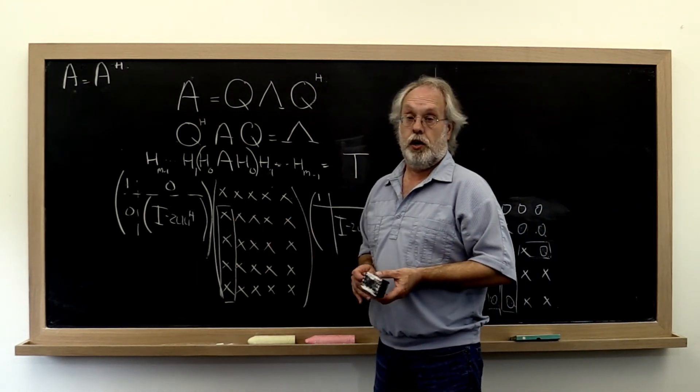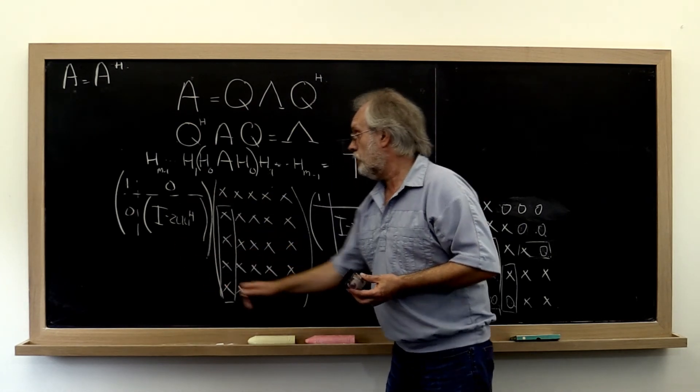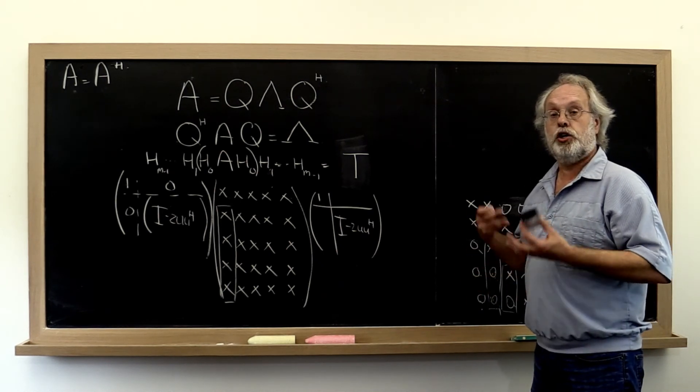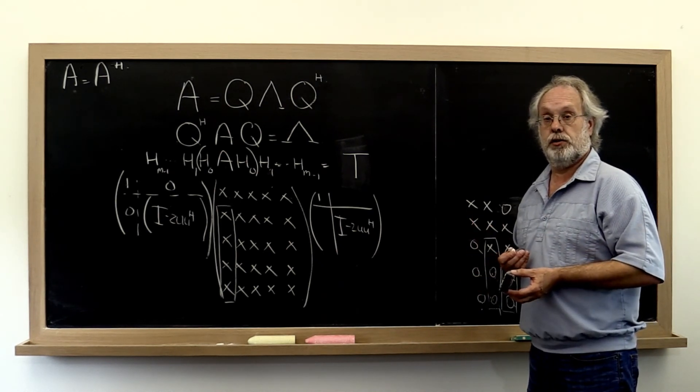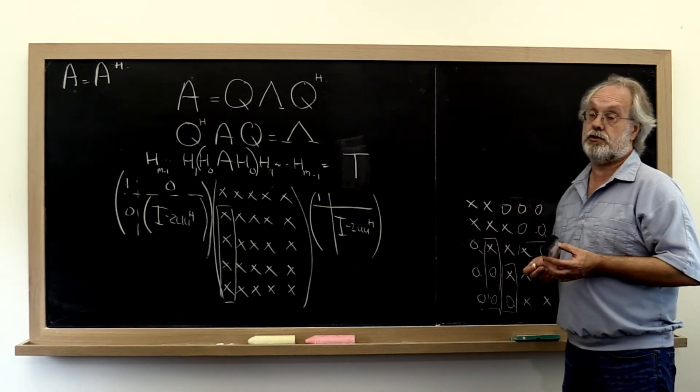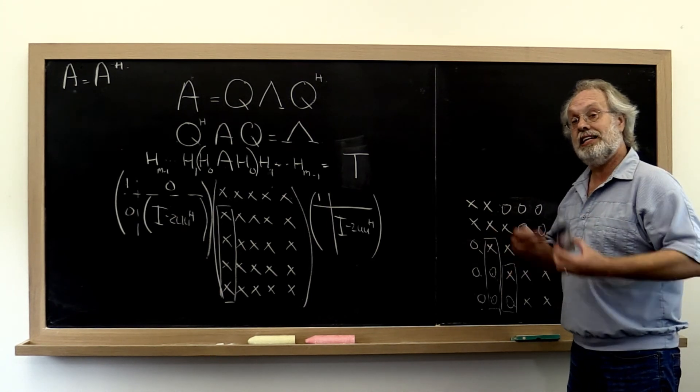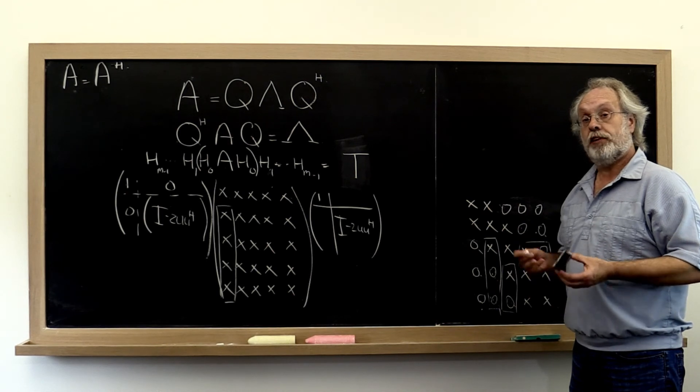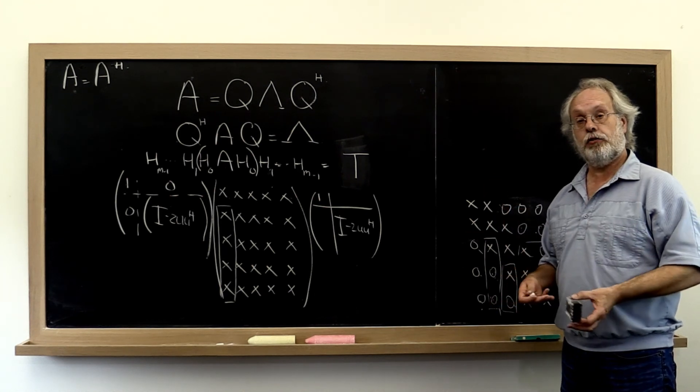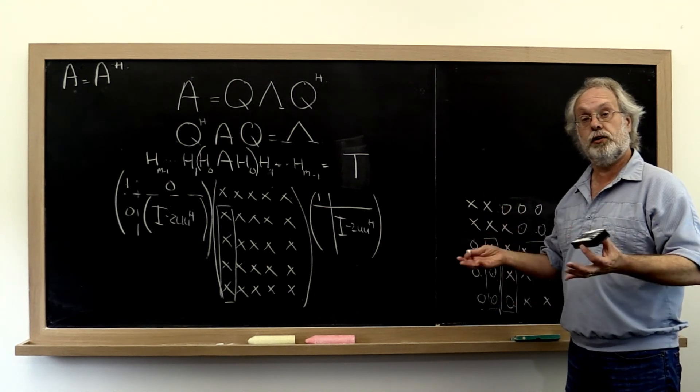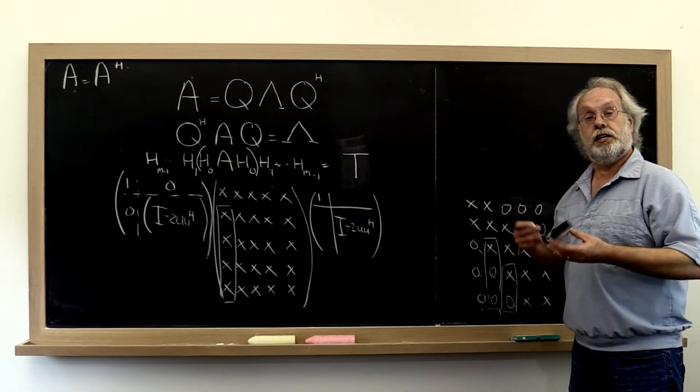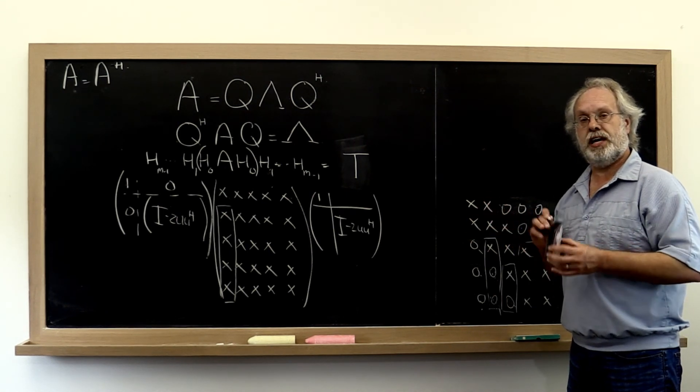The second observation is, well, we're going to let you do this in a homework. But you're going to see that the total computation for reducing the matrix to tridiagonal form is an order M cubed computation. So if it's now the case that if we start iterating the QR algorithm with this tridiagonal matrix, if that means that each iteration becomes a lot cheaper, hopefully order M squared, then all of a sudden we've taken an impractical algorithm that costs order M to the fourth for the complete QR algorithm, and we will have reduced that to something that overall is order M cubed. And that's where we're headed next.